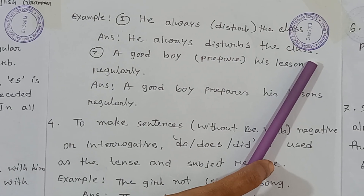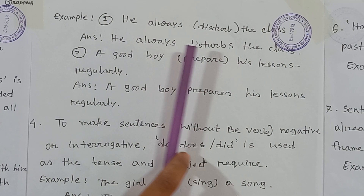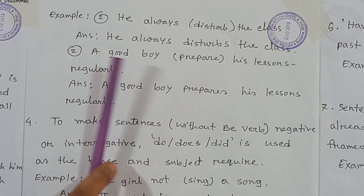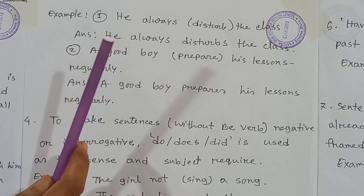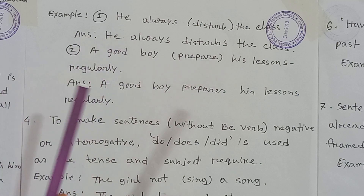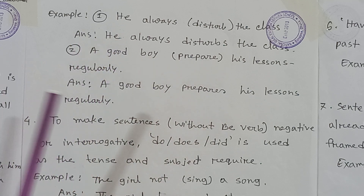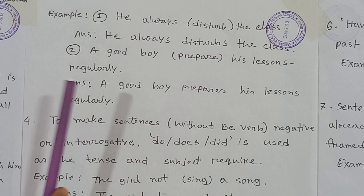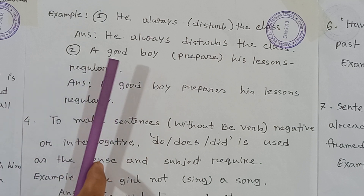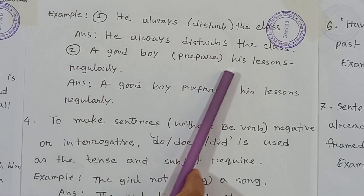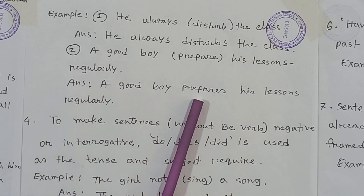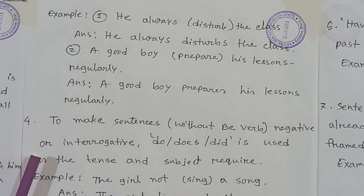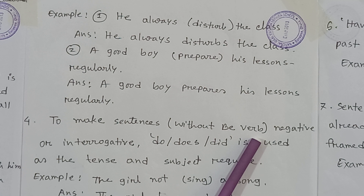As per our rule, sentences with adverbs like always, regularly, sometimes, often, every day, usually, etc. are framed in the present indefinite tense. Another example: 'A good boy (prepare) his lessons regularly' — you write 'A good boy prepares his lessons regularly.'